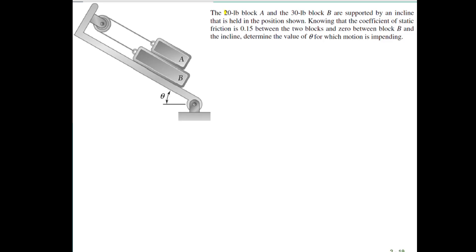Another example, we have a 20-pound block A on a 30-pound block B. We've got a cable. We've got a friction coefficient between the blocks, zero between the blocks and the ground. Find the angle where it's not going to slip, so just barely before this thing starts sliding.